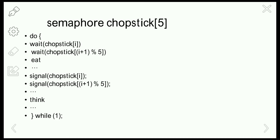So we declare semaphore chopstick[5], since there are 5 philosophers and 5 chopsticks. We then perform wait(chopstick[i]). The i value will be initially 1. If a person wants to eat, he will execute wait on chopstick[i], checking whether a chopstick is free. If both chopsticks are free, only then can he eat.